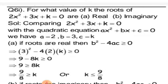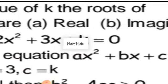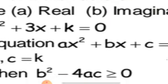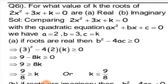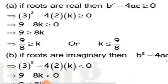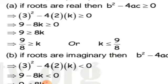Question six: for what value of k are the roots of the equation real, and for what value are they imaginary? For real roots, discriminant must be greater than or equal to zero. For imaginary roots, discriminant is less than zero. Compare to find a, b, and c. First case — roots are real: b² minus 4ac is greater than zero. Putting values in: 9 minus 8k is greater than zero, giving k less than or equal to 9 over 8. For imaginary roots, the discriminant is less than zero.